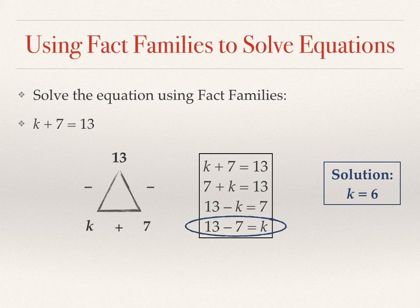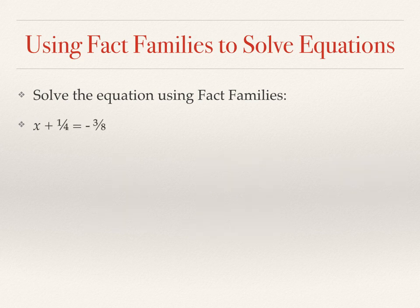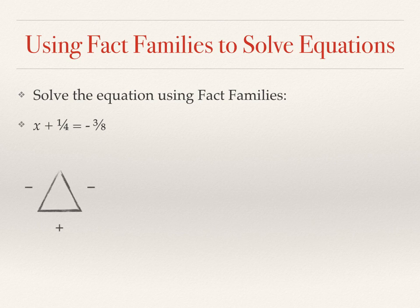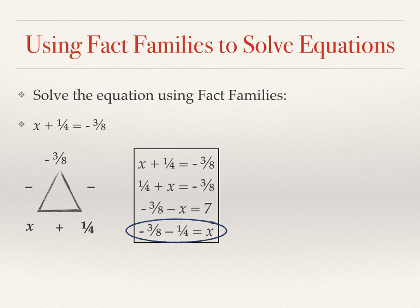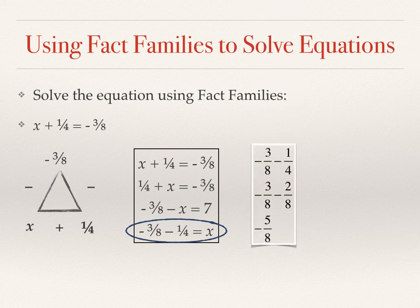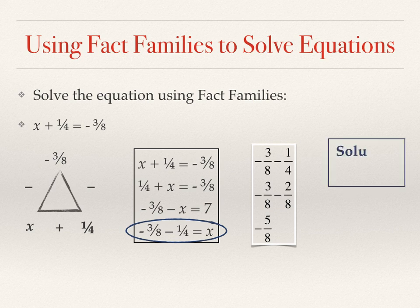All right. What about fractions? Will this work for fractions? Sure. Let's set up an addition and subtraction triangle. And x and 1 fourth would go at the bottom, negative 3 eighths at the top. And the most direct equation to solve for x. Can you see this? It would be negative 3 eighths minus 1 fourth equals x. But sometimes it's better to go ahead and write the different equations. But now hopefully you will see the one at the bottom is more direct. So when we solve this equation, remember we need common denominators. We'll show you what that looks like. And our solution is x equals negative 5 eighths.